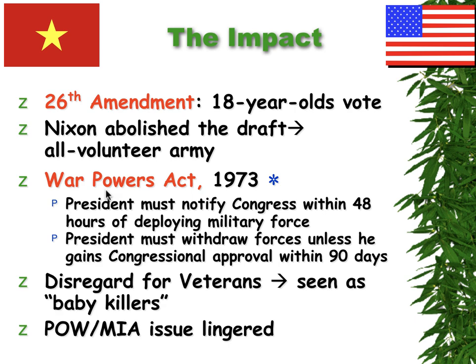The War Powers Act is also important. The Gulf of Tonkin Resolution allowed the president to have more authority, but the War Powers Act limits the president's power. If the president wants to use troops anywhere, he or she can do so, but must tell Congress within 48 hours. At the end of that period, he or she must get approval from Congress. If Congress does not give approval within 60 days, then the president has an additional 30 days before troops must be removed — which is why a total of 90 days can be used without any congressional authority.